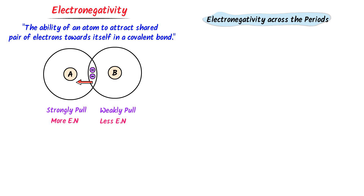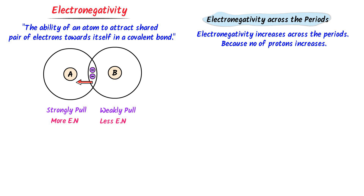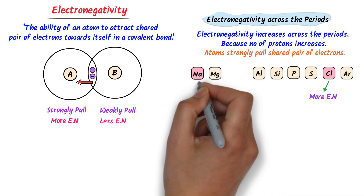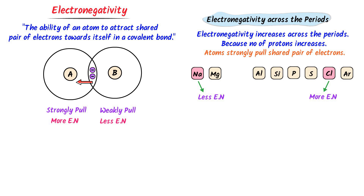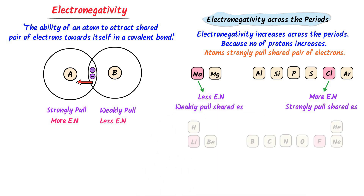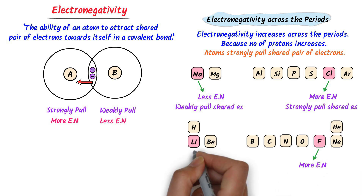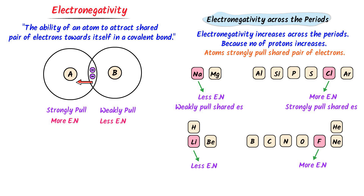Now we will learn trends of electronegativity across the period. Remember that electronegativity increases from left to right because the number of protons increases and the size of atoms decreases, due to which atoms strongly pull the shared pair of electrons. For example, in the third period, chlorine is more electronegative than sodium because chlorine has smaller size. In the second period, fluorine is more electronegative than lithium because fluorine has smaller size and easily pulls the shared pair of electrons, while lithium has larger size and cannot. Therefore, electronegativity increases from left to right across the period.